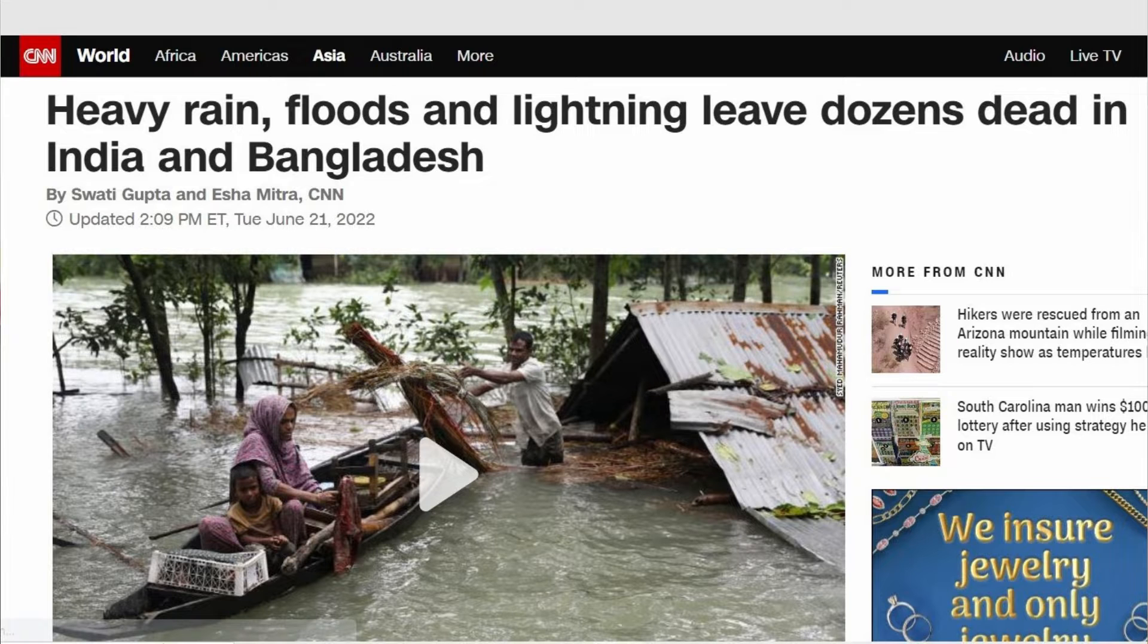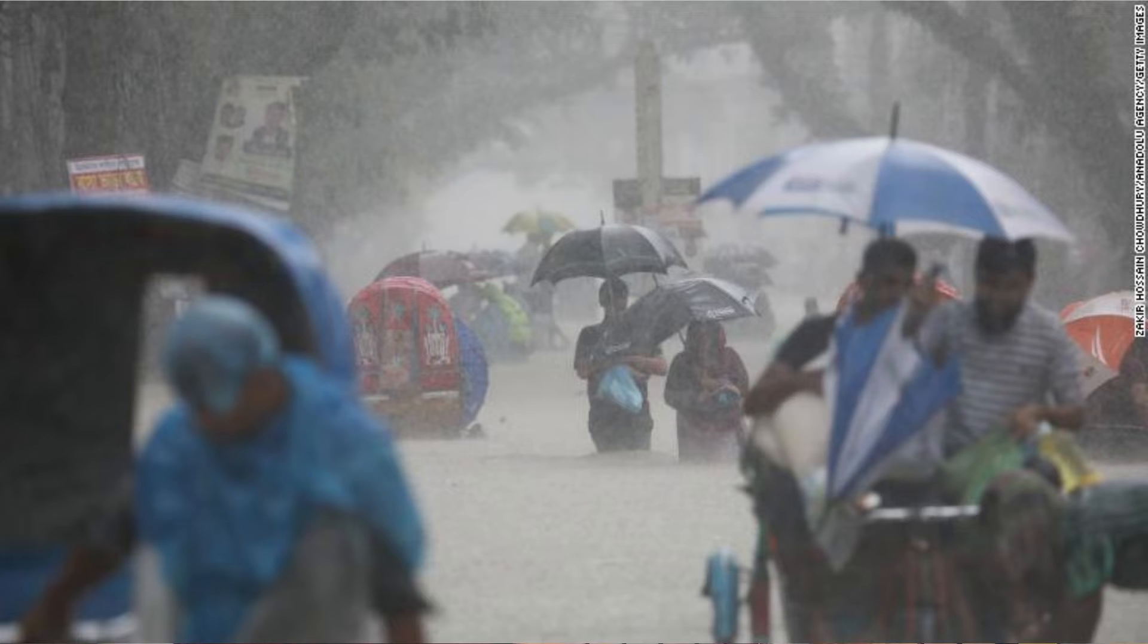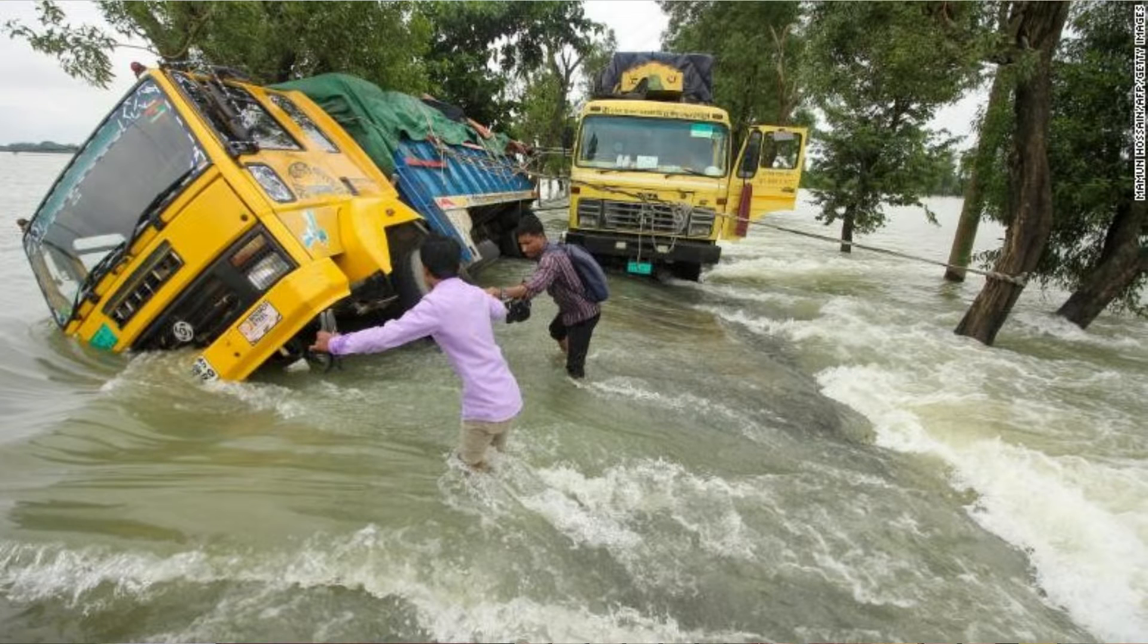Note also, at least 84 people have died in landslides, lightning strikes, and flash floods. Roads and highways underwater as parts of India and Bangladesh hit by historic flooding.